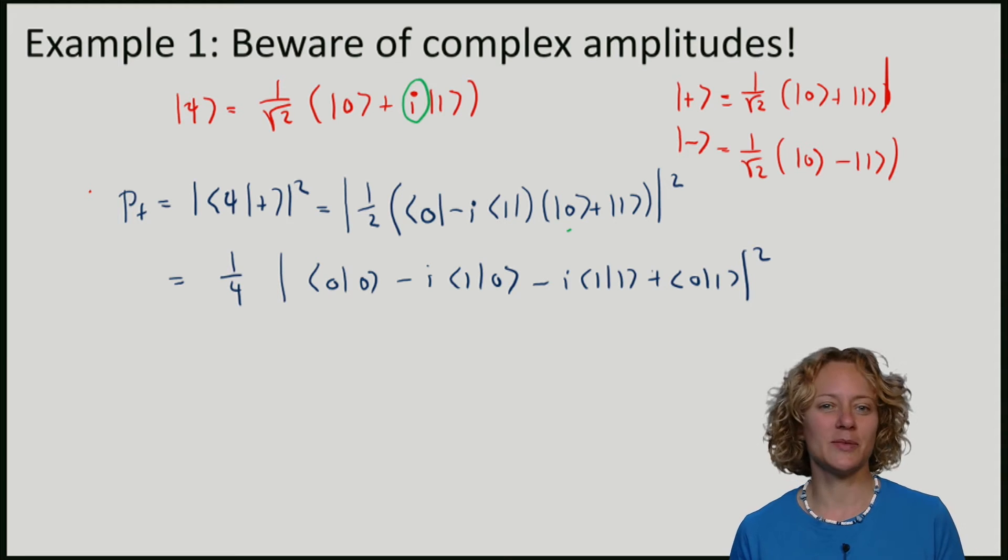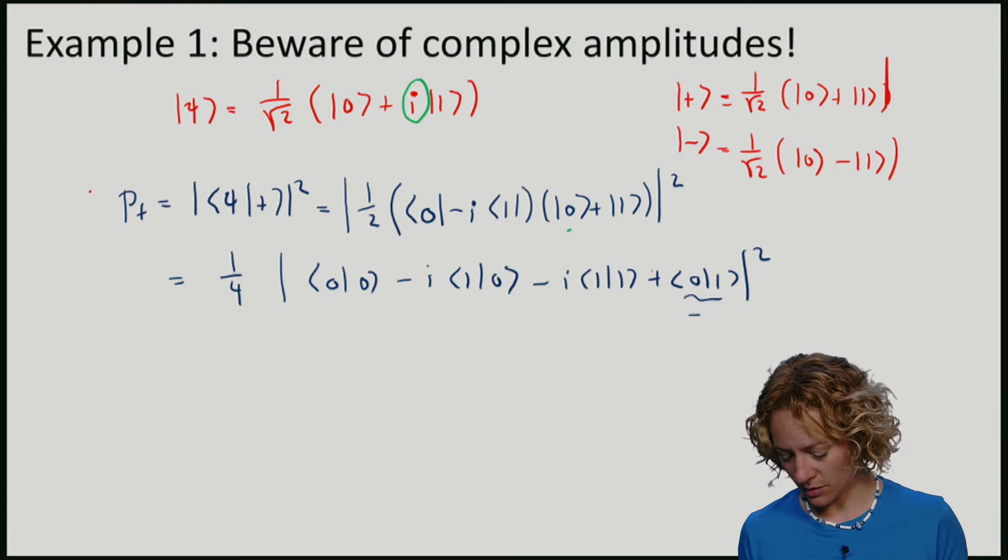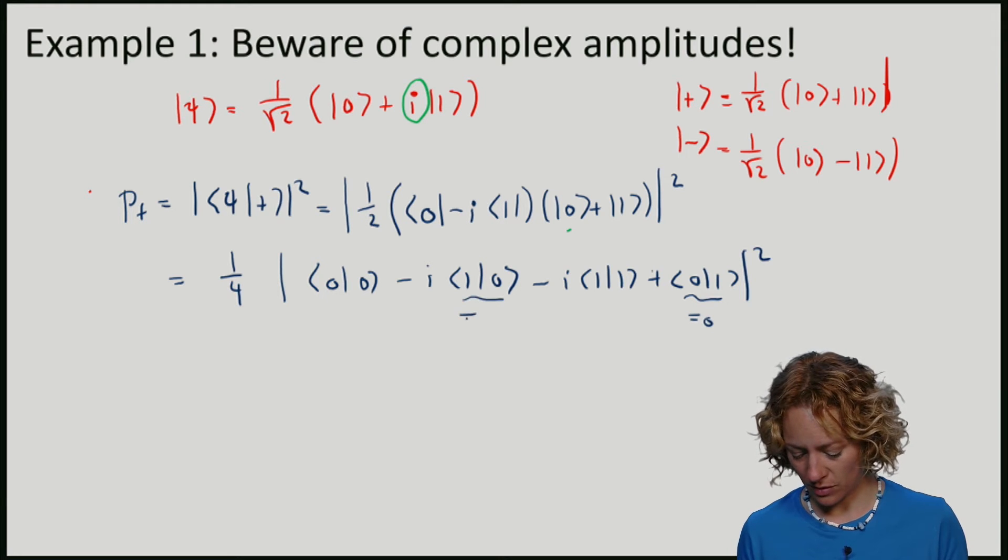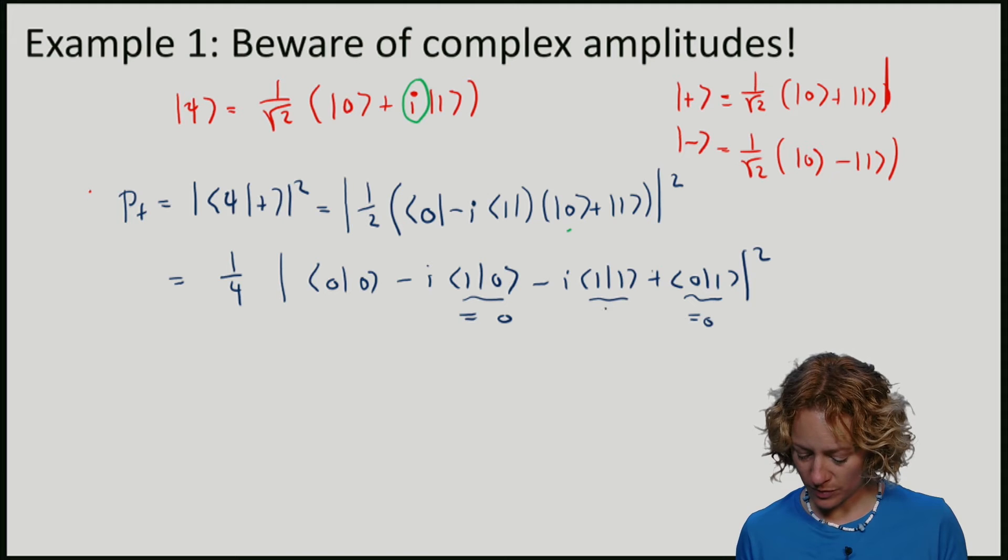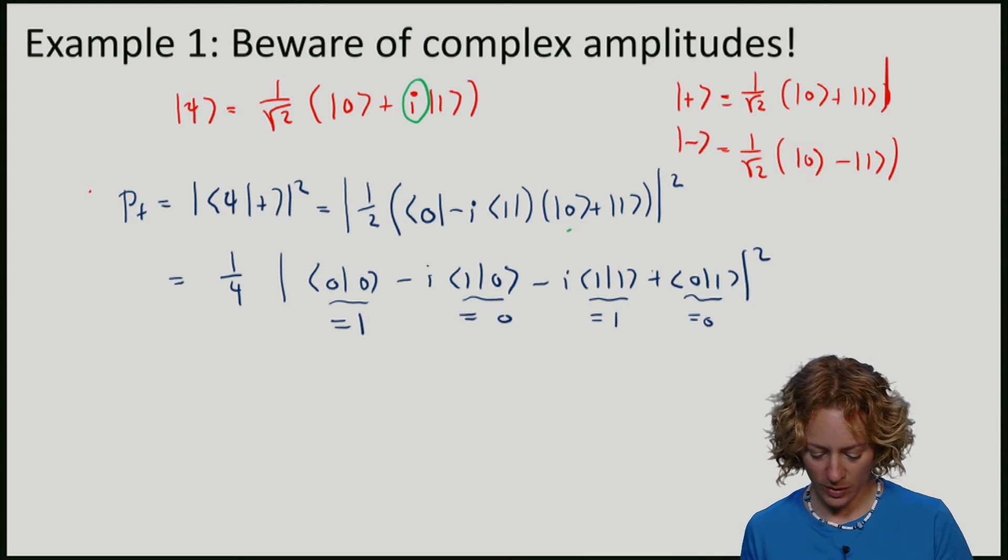So remember that the elements of the standard basis are orthogonal to each other, which means that this here is zero, and this here is zero. And the vectors have length one, so this here has length one, and this one has length one.